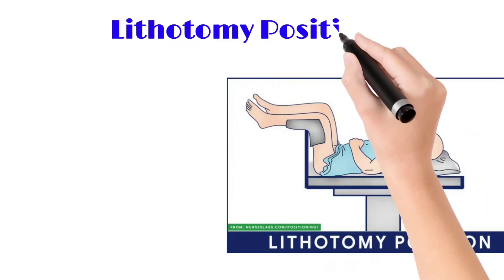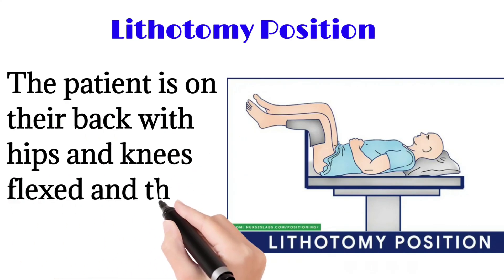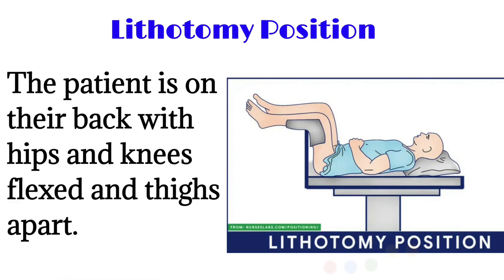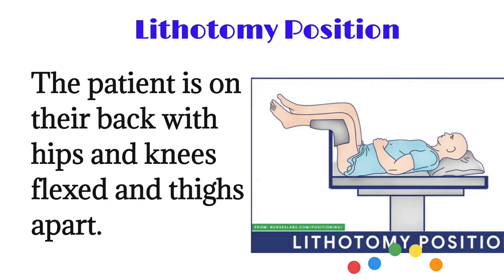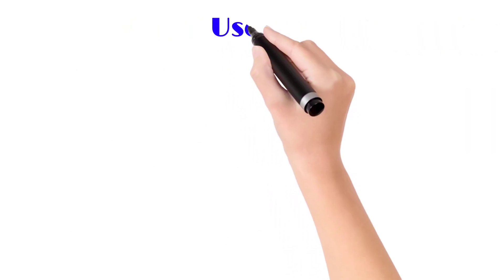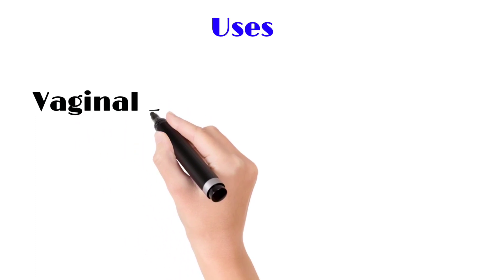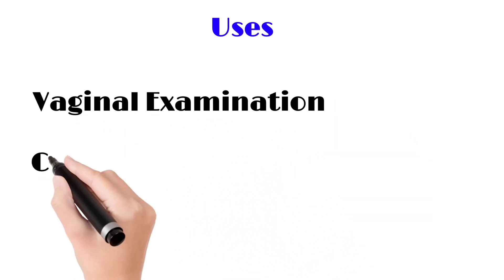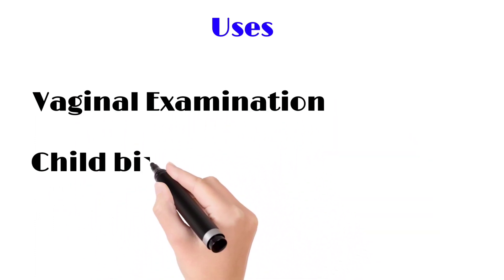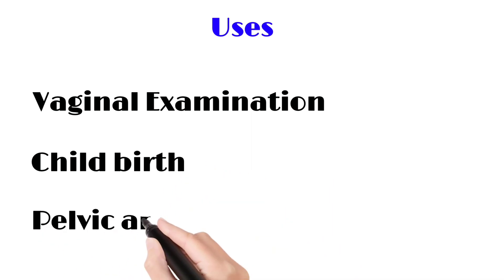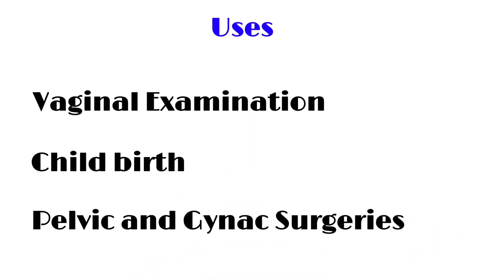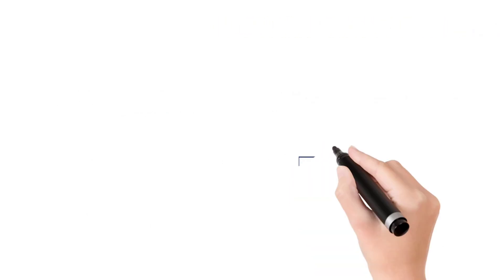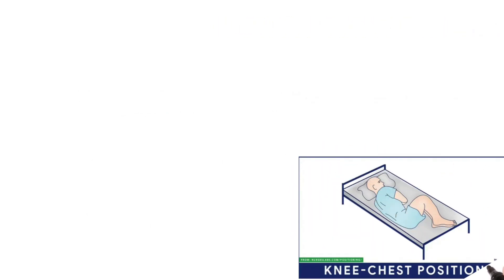Next is the lithotomy position — the patient is on their back with hips and knees flexed and thighs apart. The patient is supine with legs slightly raised, knees bent, and thighs spread, making the perineal area clearly visible. Uses include vaginal examination, childbirth in the labor ward, and pelvic and gynecological surgeries.